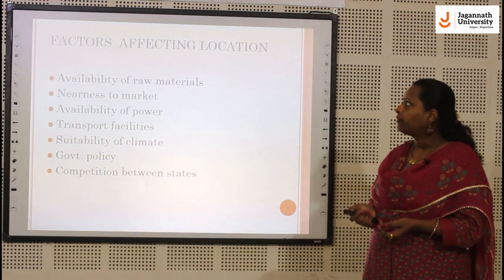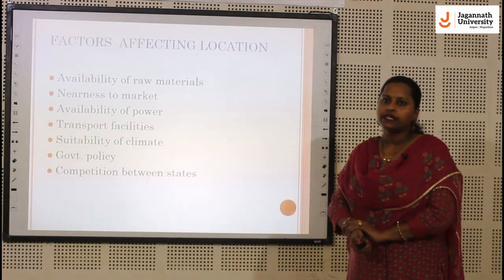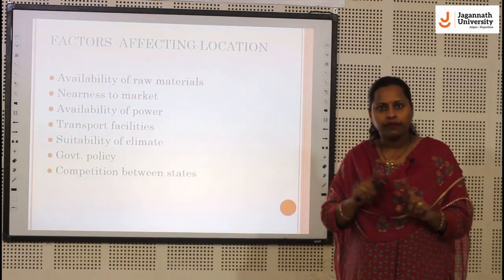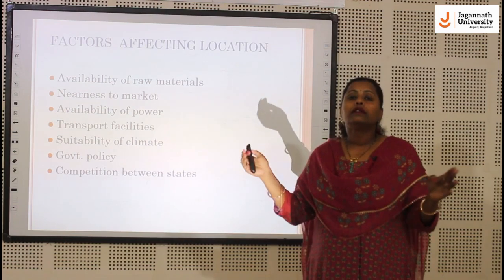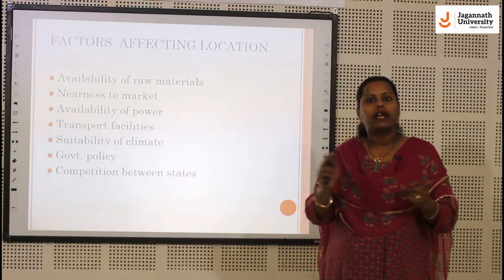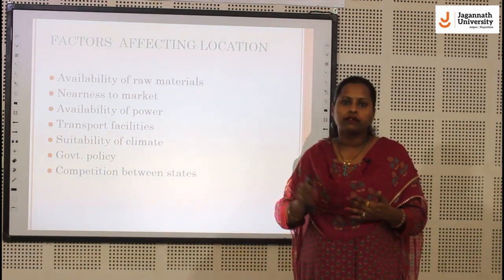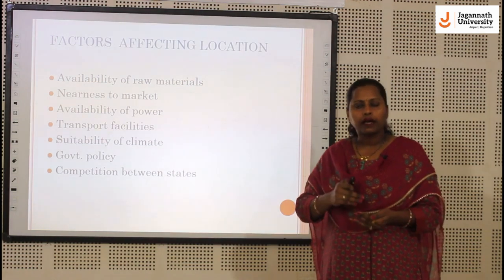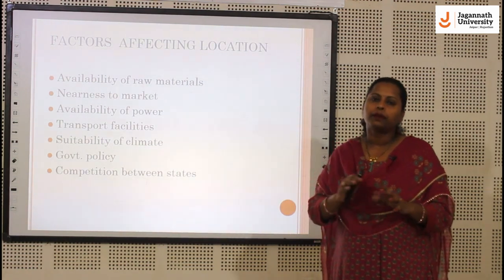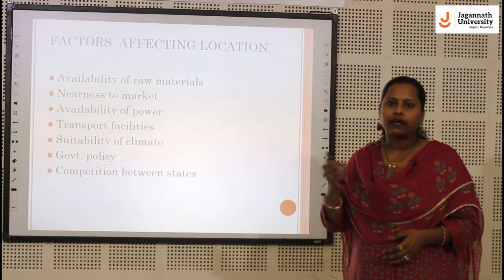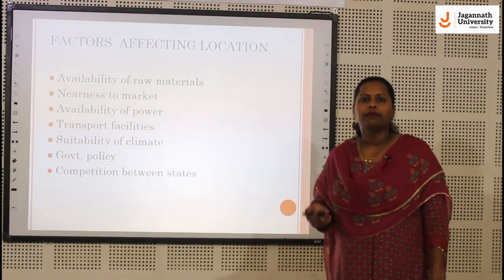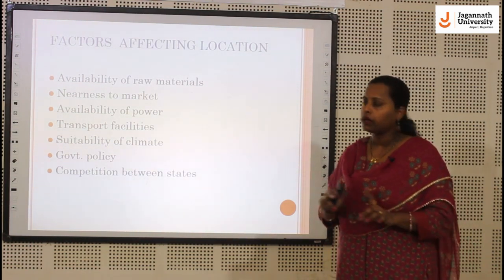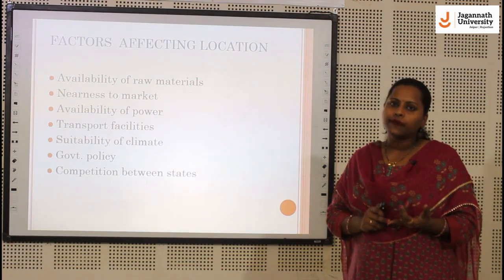When we talk about the factors affecting location, the first factor is availability of raw material. When you are going to select a site or manufacturing unit for a particular product, the required raw material should be available in the nearby area to minimize the transportation cost. Nearness to the market — the potential market should be near to your factory. Availability of power, fuel, and other facilities should be available at that particular location or site.